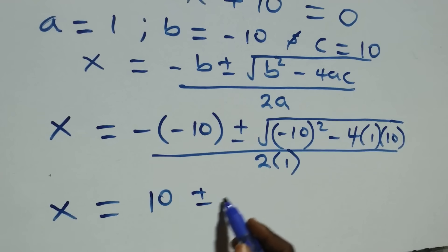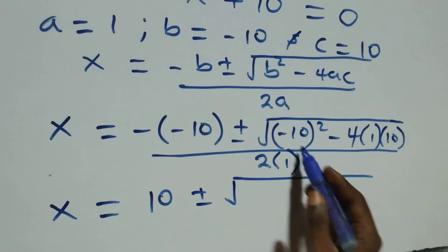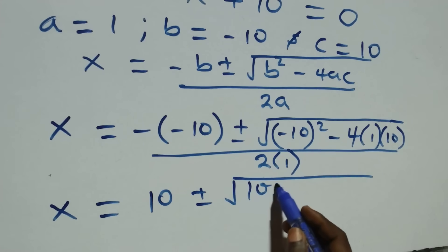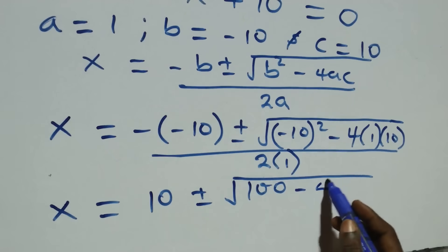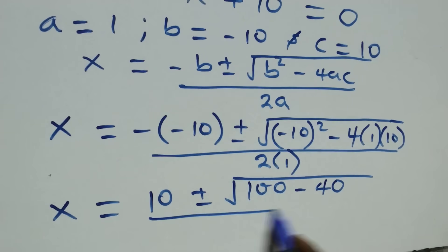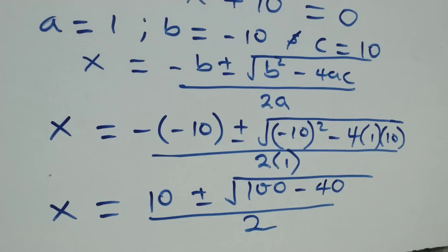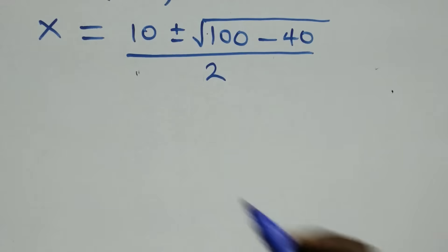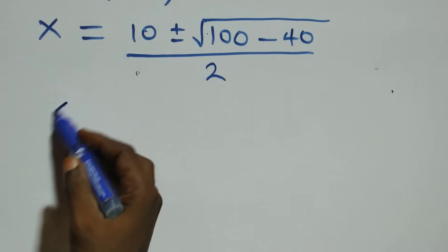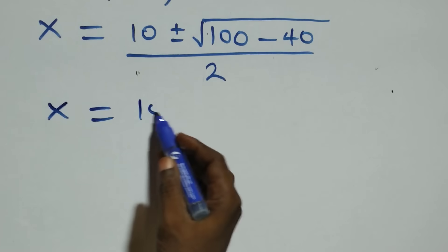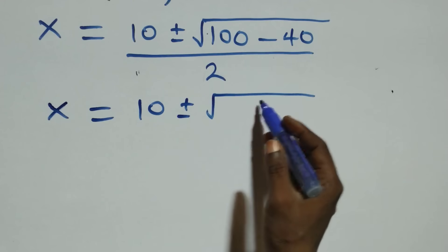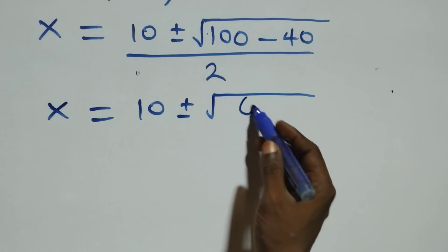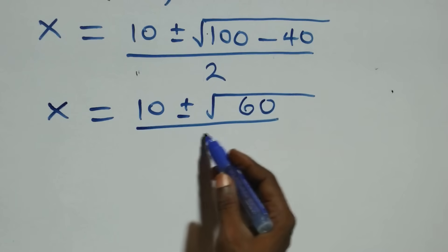That gives x equals ten plus or minus the square root of one hundred minus forty, all over two. One hundred minus forty is sixty, so x equals ten plus or minus square root of sixty, all over two.